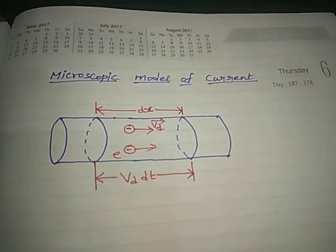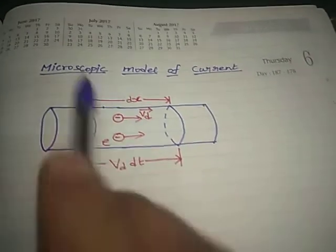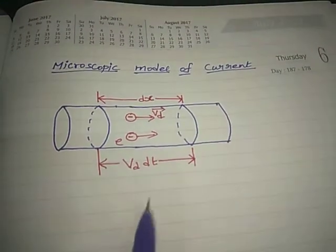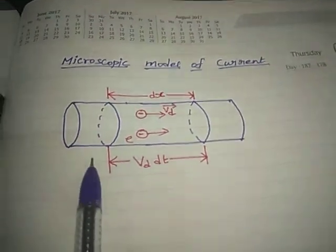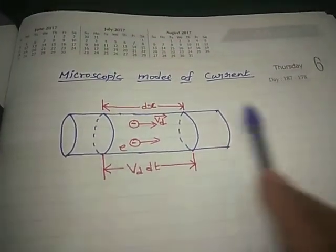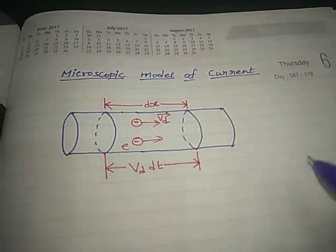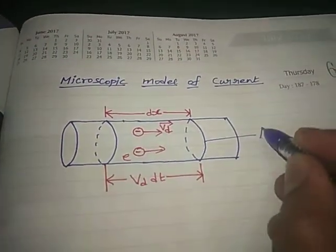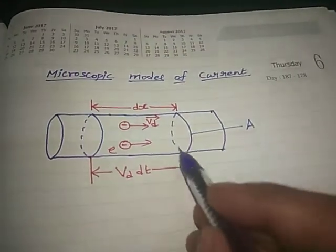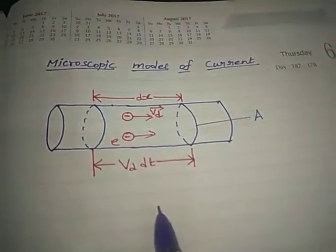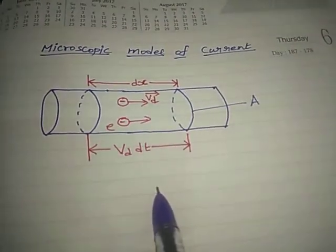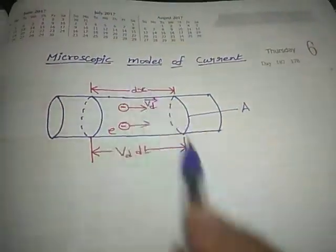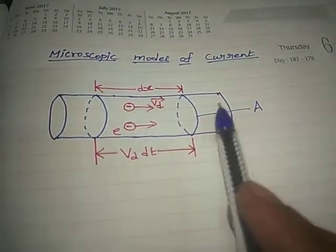Let us consider the microscopic model of current. Consider a conductor whose area of cross section is A. When an electric field is applied to the conductor from right to left, a force is created on the electrons.